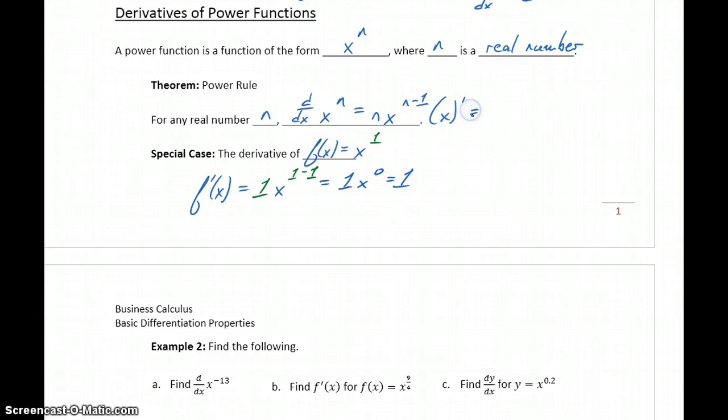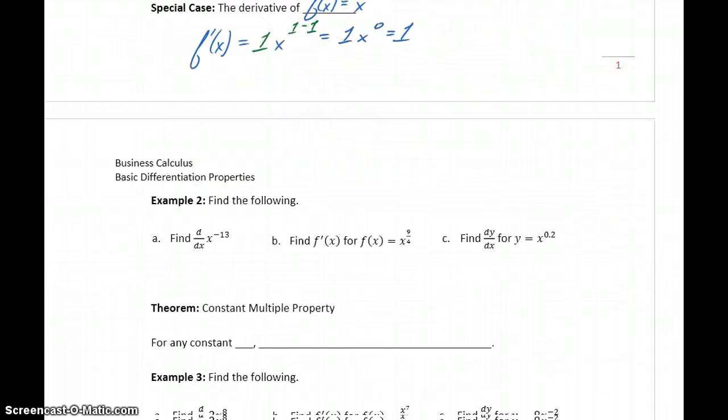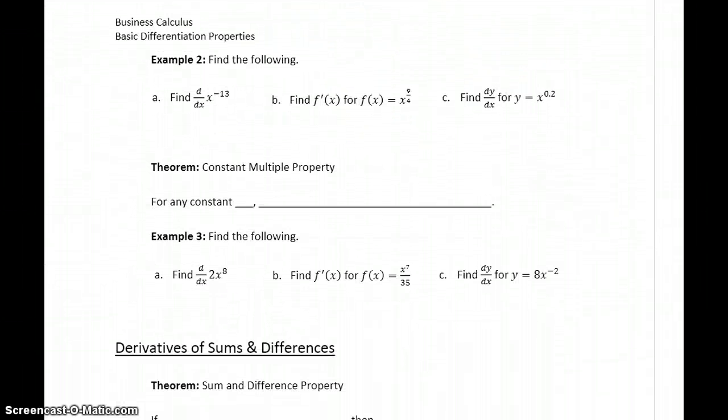So our power rule could be simplified here to be n times x to the n minus 1. So the original exponent drops down, and then we reduce that exponent by 1. So we can apply this to a couple of examples.